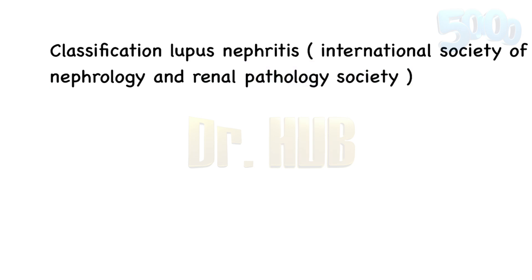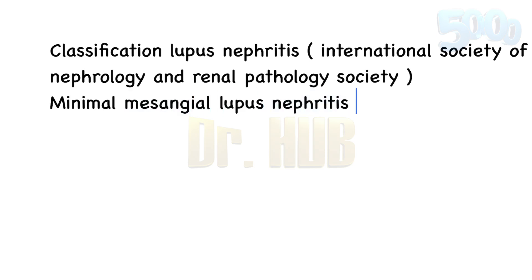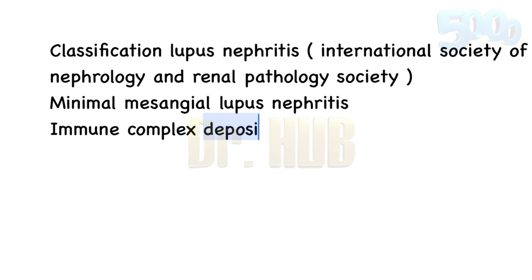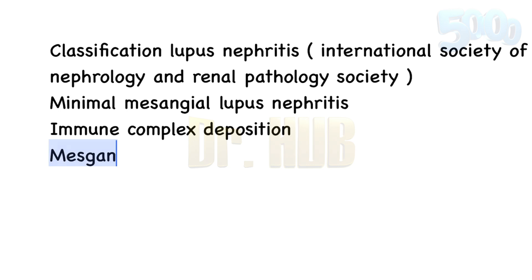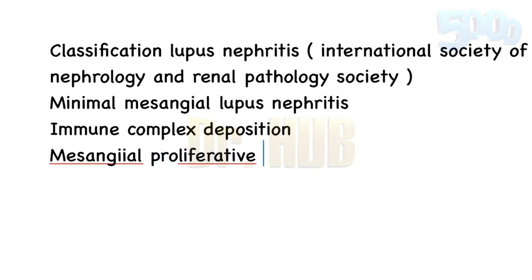The first class is minimal mesangial lupus nephritis. The finding here is immune complex deposition in the mesangium without structural changes in the light microscope — so there are no observable changes in light microscopy.